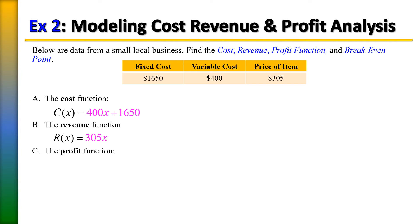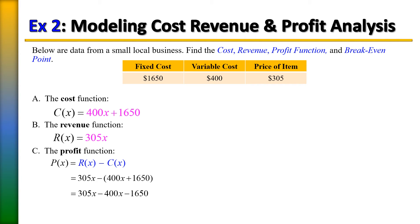To find the profit function, we subtract the cost from the revenue. P(x) = R(x) − C(x) = 305x − (400x + 1,650). Because that group has a negative in front of it, we change the terms to their opposites: negative 400x minus 1,650. Combining like terms gives us the profit function.